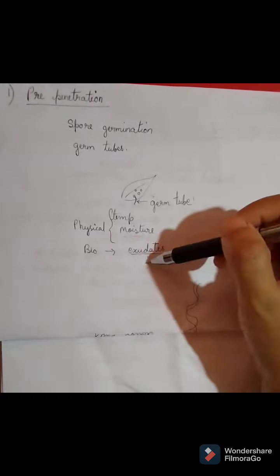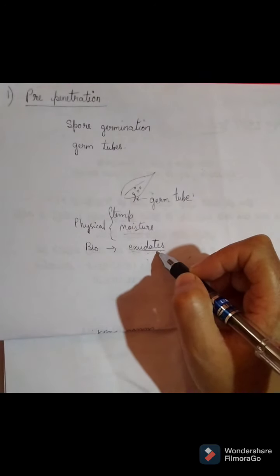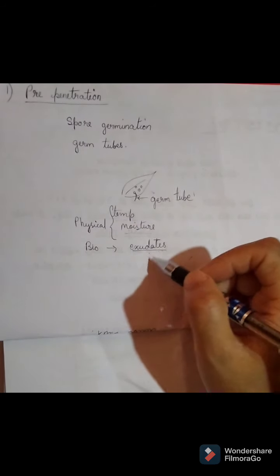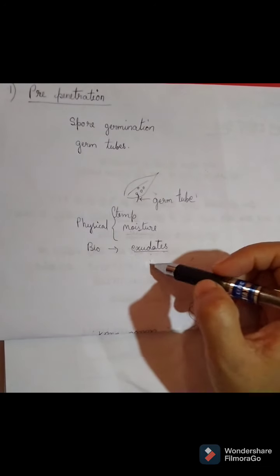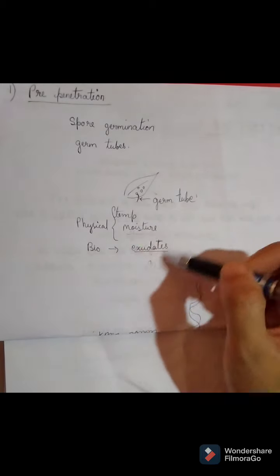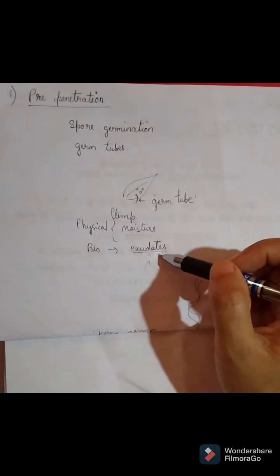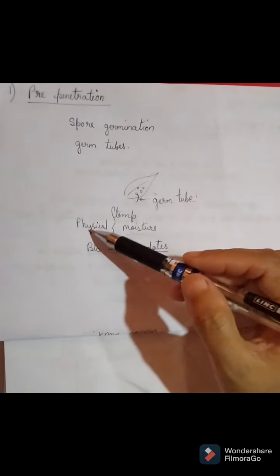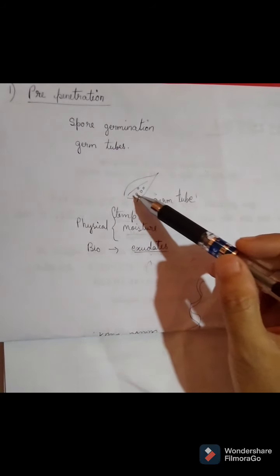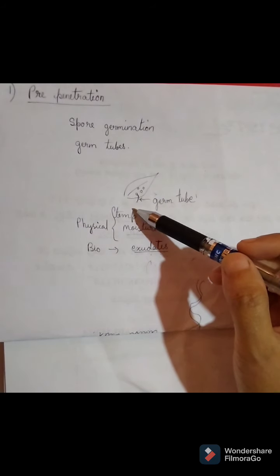Exudates are substances released from the roots of plants — organic substances and other substances produced by the plant. With the help of these exudates and physical factors such as temperature and moisture, they help in the formation of the germ tube, that is, in spore germination.